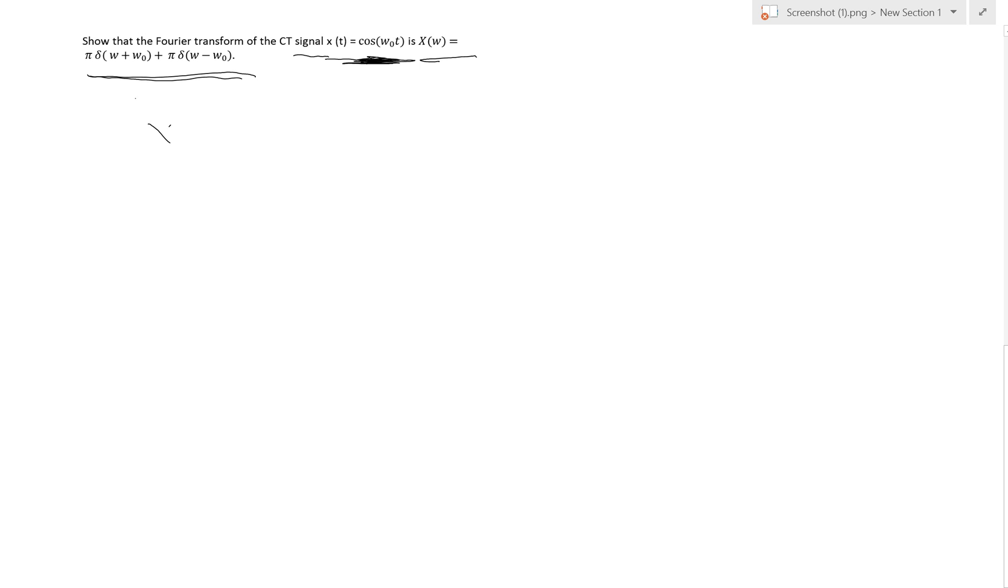So the first thing to do is write down the inverse, the definition of inverse Fourier transform which equals x(t) = 1/(2π) ∫_{-∞}^{∞} X(ω) e^{jωt} dω.